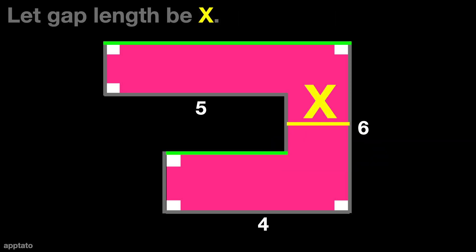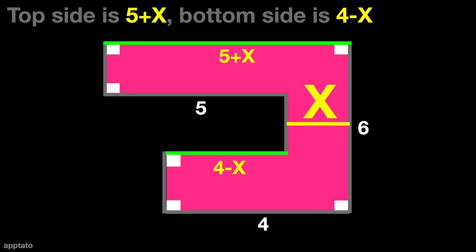Let the gap length be x. So now we have the top side as 5 plus x and bottom side as 4 minus x.